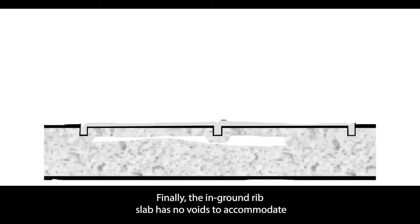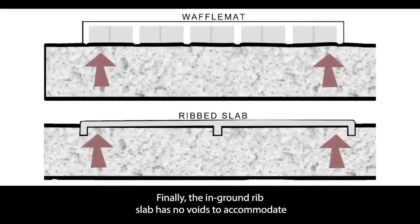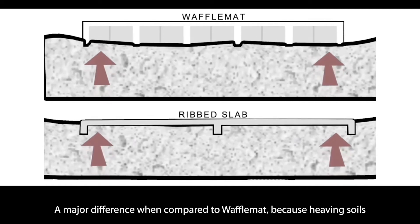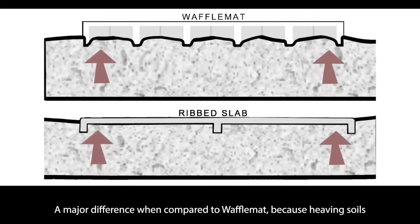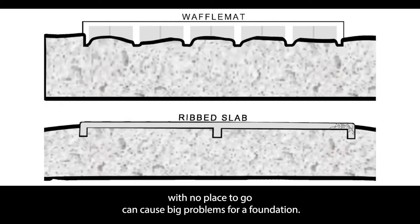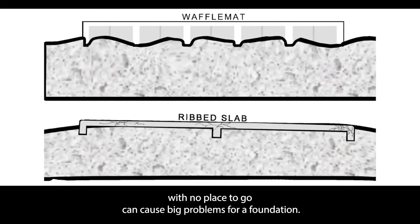Finally, the in-ground rib slab has no voids to accommodate any movement of soils. A major difference when compared to Wafflemat, because heaving soils with no place to go can cause big problems for a foundation.